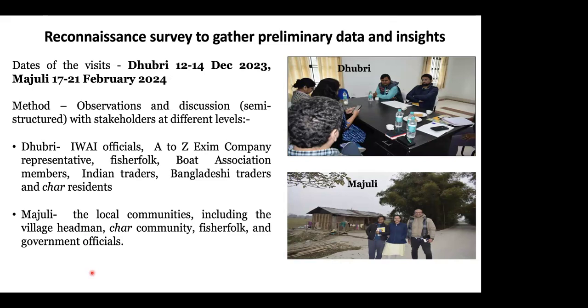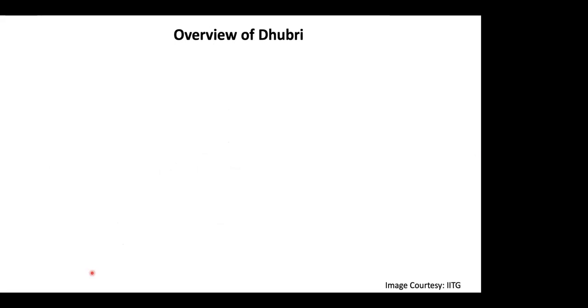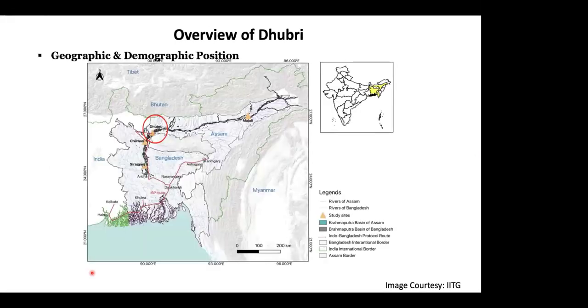The second visit was to Majuli in February, where we interacted with local communities including village headman, char community, fisher folks, and government officials. I will give more emphasis on Dhuburi. As an overview: Dhuburi is a key district in Assam because it is a gateway to both interstate and international borders, sharing an international border with Bangladesh. Because of this, many native and migrant communities live in Dhuburi. Its economy is primarily dependent on agriculture, though some work as daily wage laborers or small shop owners. Industrially, Dhuburi is very backward.